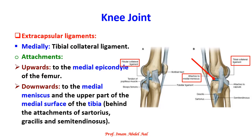The second extracapsular ligament is the tibial collateral ligament. This ligament is attached upwards to the medial epicondyle of the femur. Downwards, it is attached to the medial meniscus and to the medial surface of the tibia, behind the three muscles: the gracilis, the sartorius, and the semitendinosus muscles.